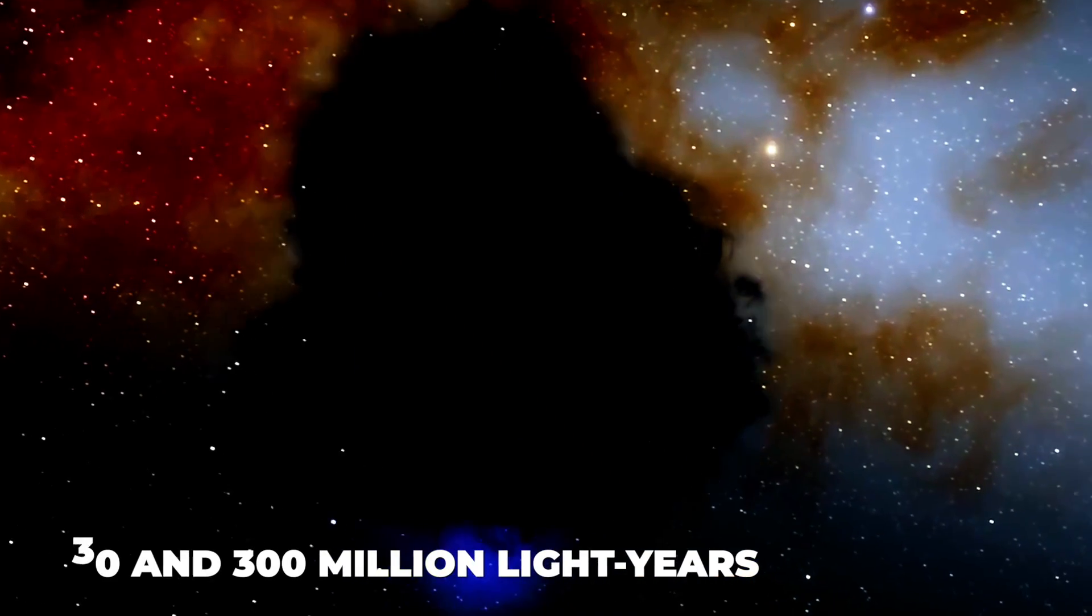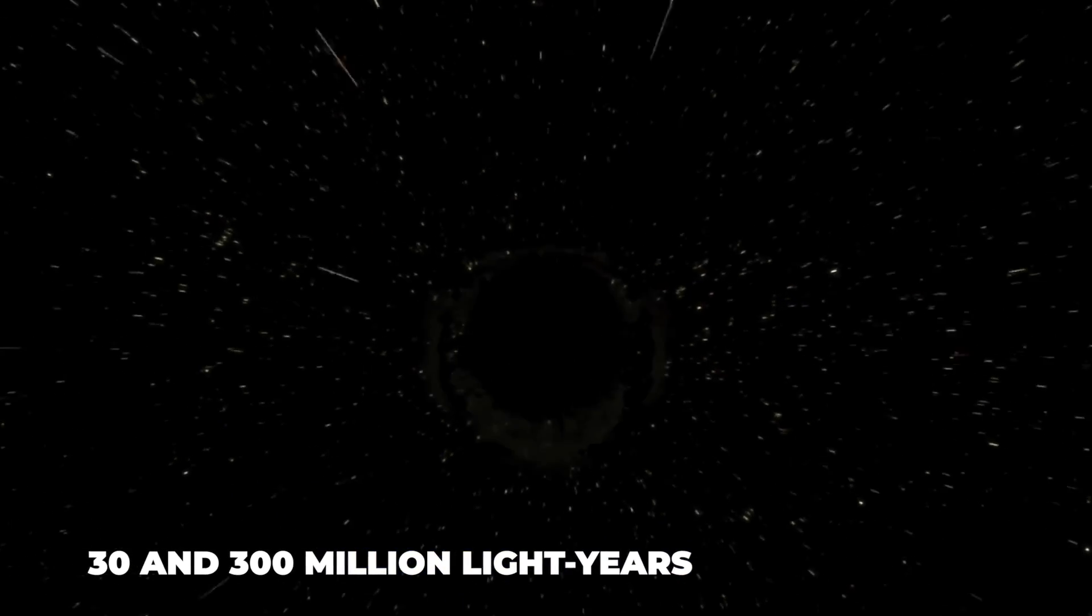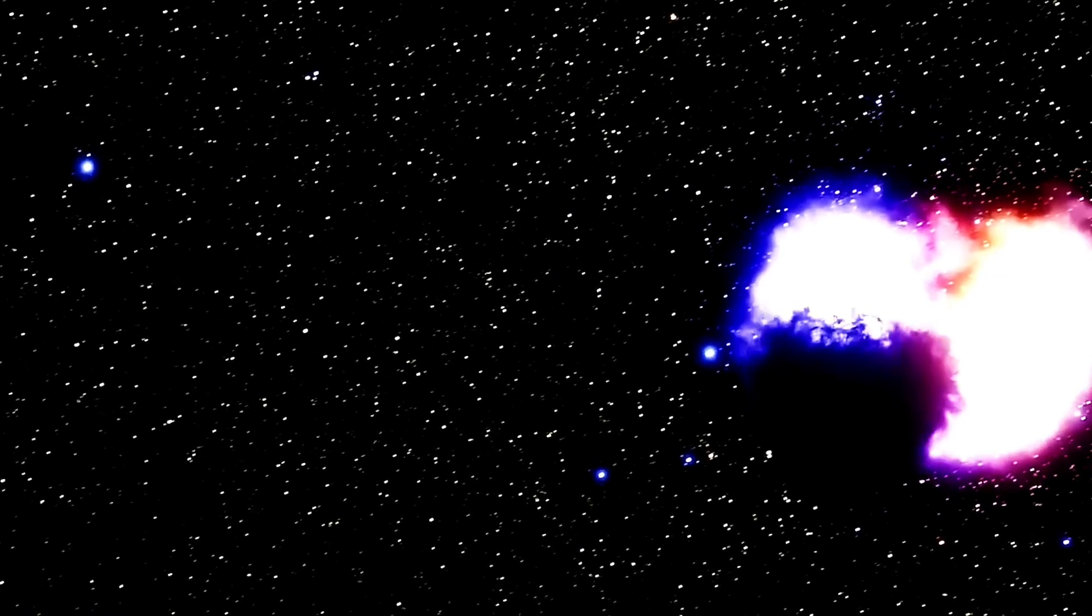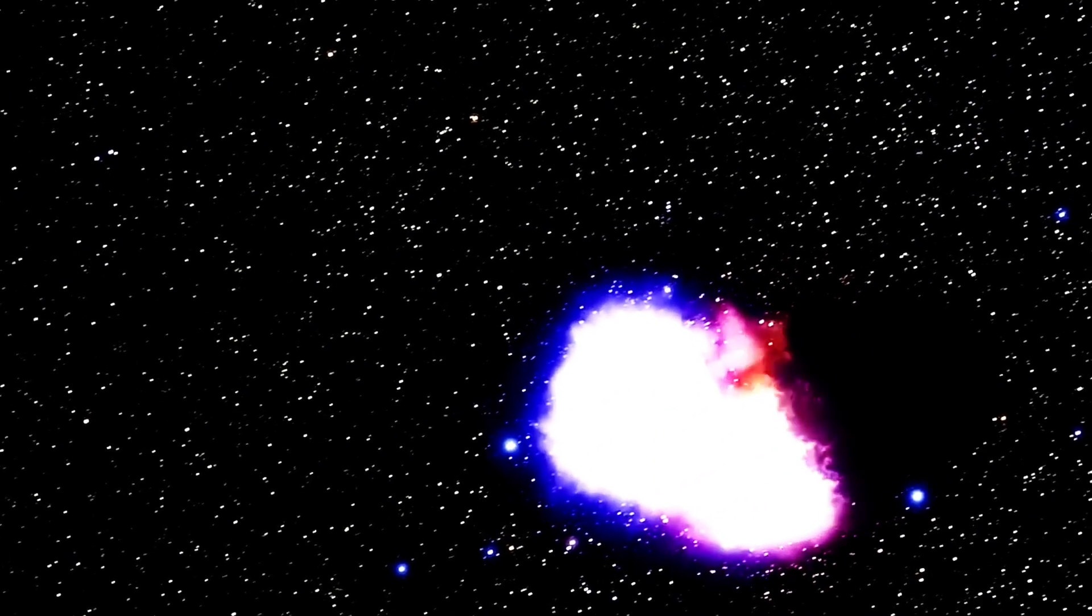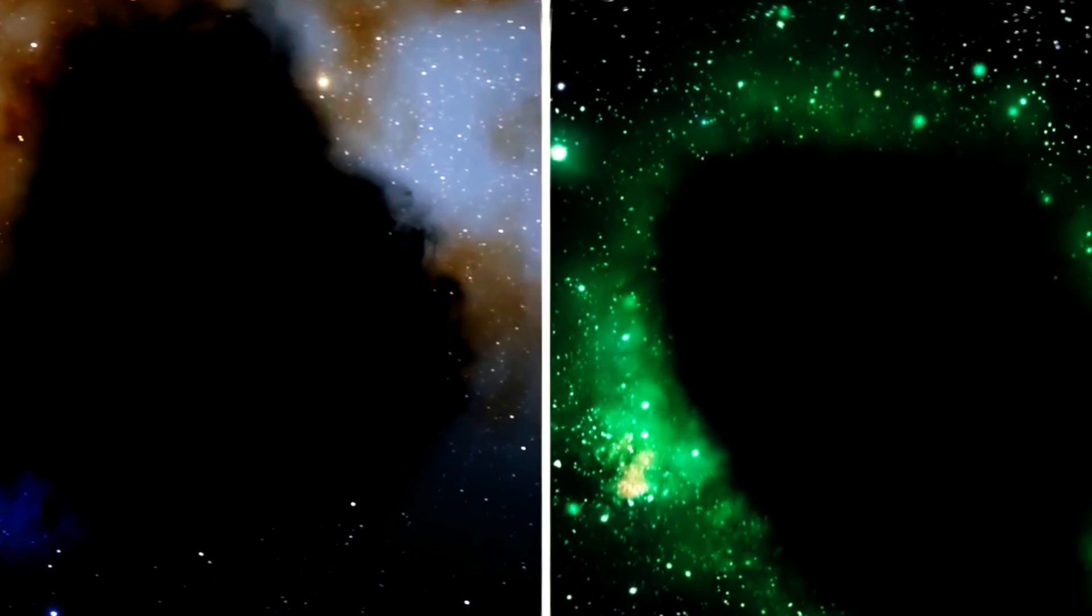However, there are vast empty spaces with scarcely any galaxies between these threads. Most of the voids are between 30 and 300 million light years extensive and make up about 80% of the visible universe. Boötes is one of the biggest and is known as a supervoid. Boötes is believed to be the result of smaller voids coming together. It is believed that the universe's beginning is what created these holes.